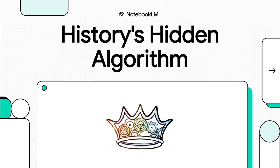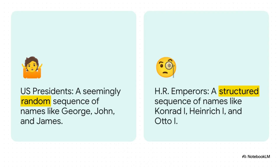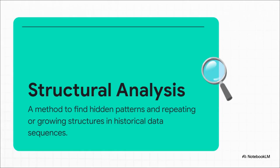When we think about history it usually feels messy, chaotic, completely unpredictable — just a jumble of names, dates, and events. But what if a huge chunk of it, especially from the medieval period, wasn't random at all? What if it was actually written to a script, following some kind of hidden algorithm? Let's dive right into the heart of this puzzle.